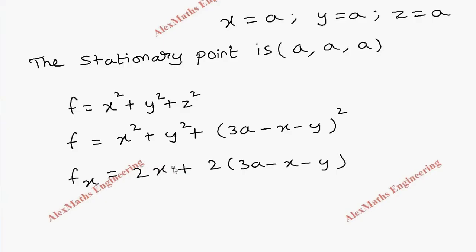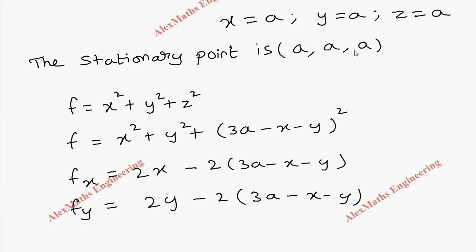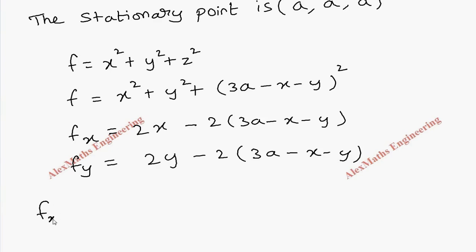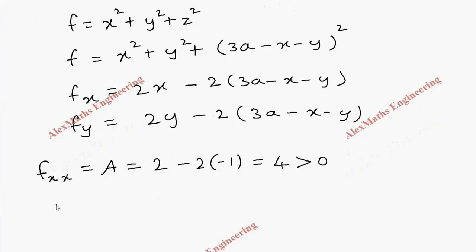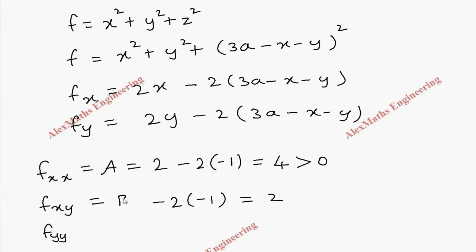We find fx = 2x + 2(3a − x − y)(−1), and fy = 2y + 2(3a − x − y)(−1). We then compute A = fxx, which is the partial differentiation of fx with respect to x again: 2 + (−2)(−1) = 4, which is greater than 0. Next, B = fxy, the partial differentiation of fx with respect to y: 0 + (−2)(−1) = 2.